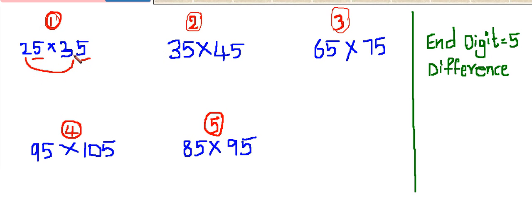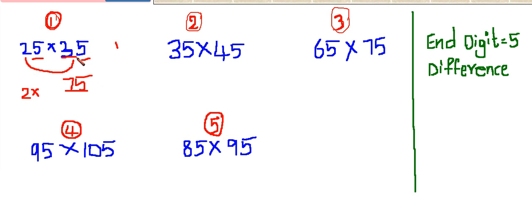Here the difference is 35 minus 25 equals 10, and the end digits are 5, so we can use this trick. The first two digits should be 75 — there is no change in these two numbers. Then multiply 2 into the next digit of 3, that is 4. 2 into 4 is 8. So 875 is the answer.